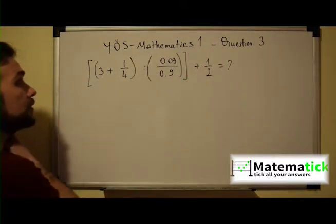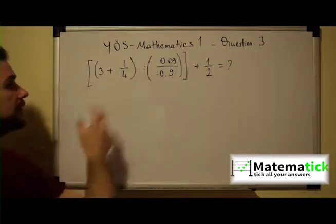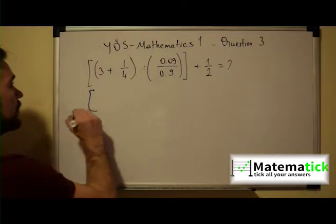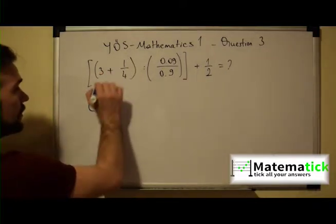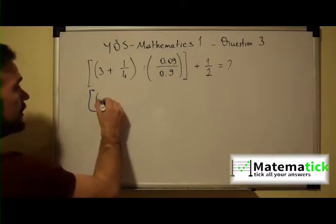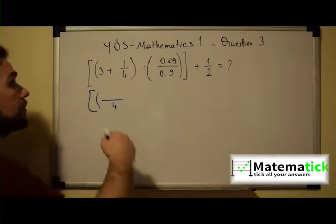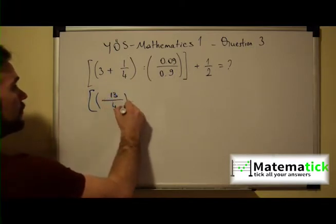The first step that we have to do is to take care of every single operation within the small parenthesis. So let's open the big ones and let's do every operation in these small parenthesis. So the common denominator here is 4. So 4 times 3 is 12 plus 1 is 13 over 4.